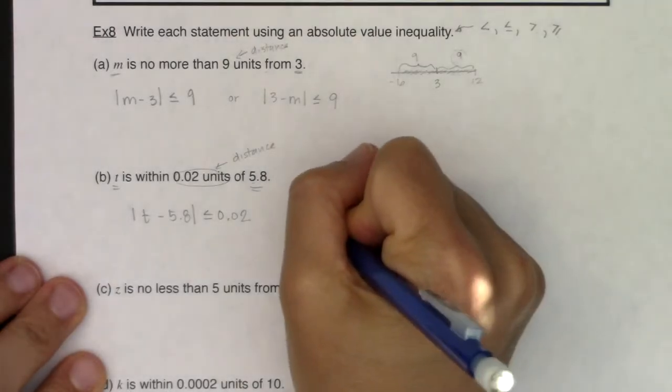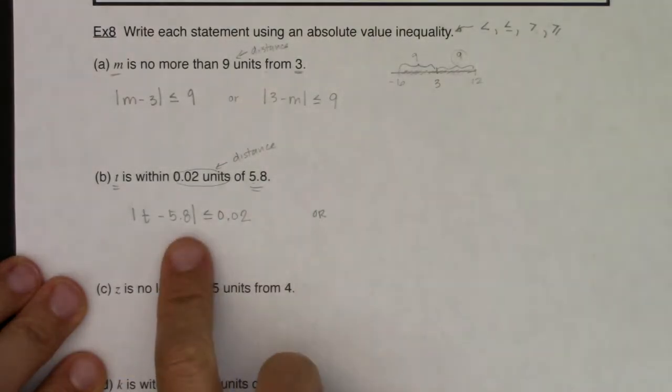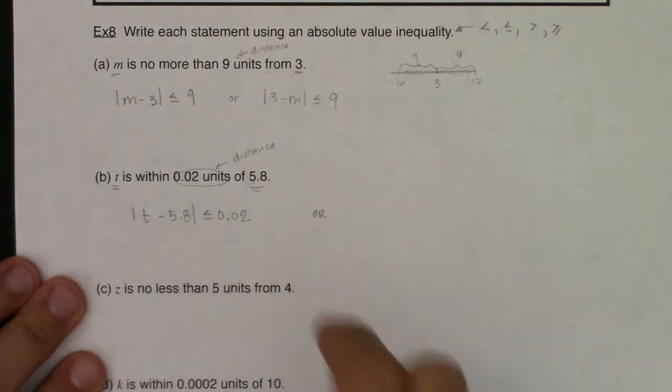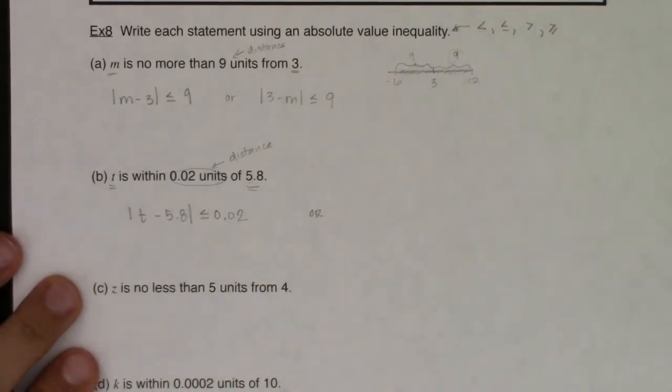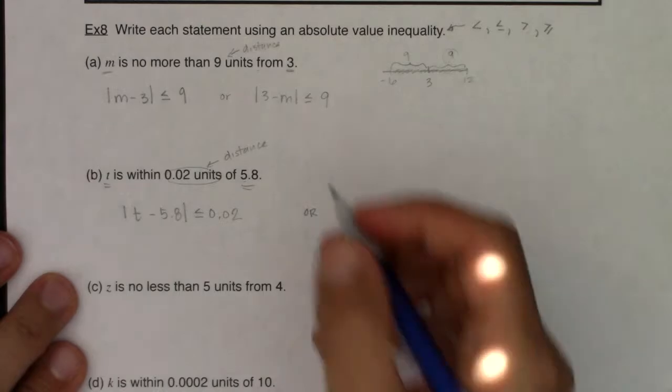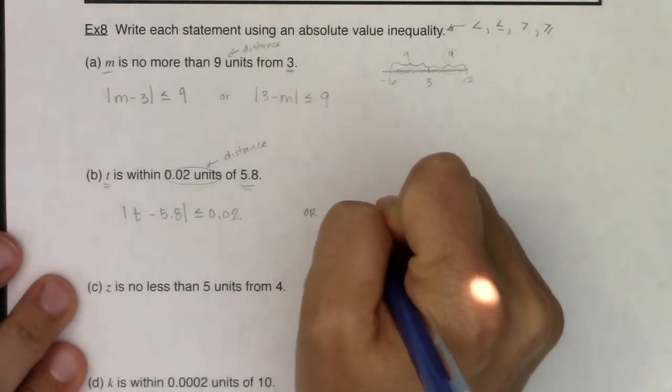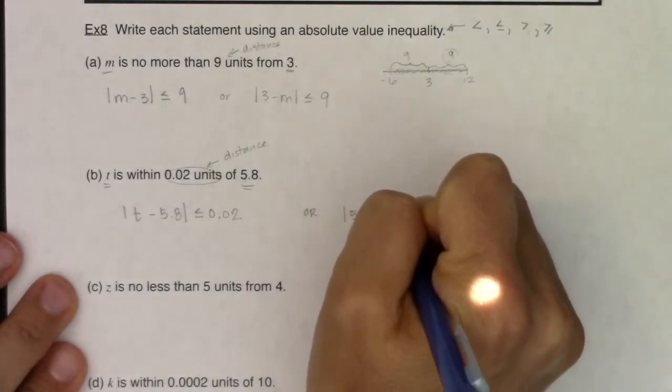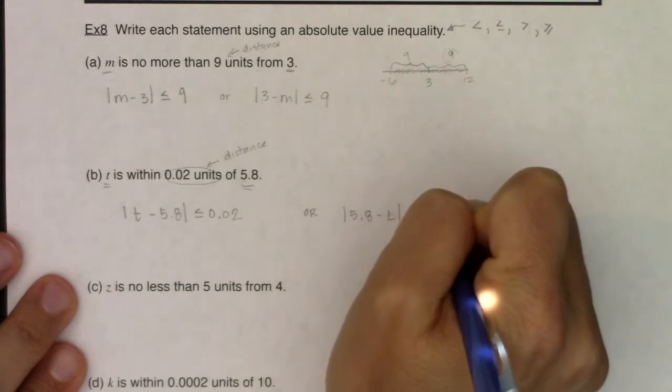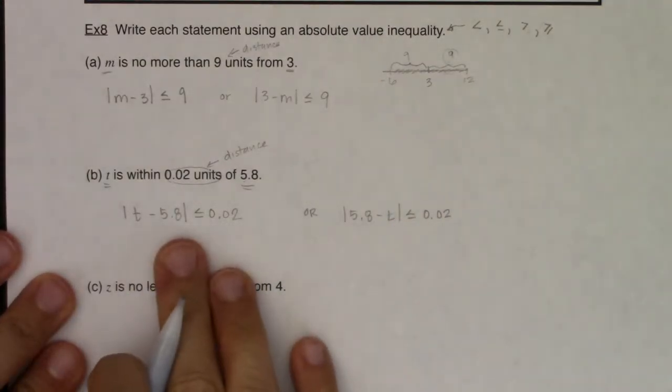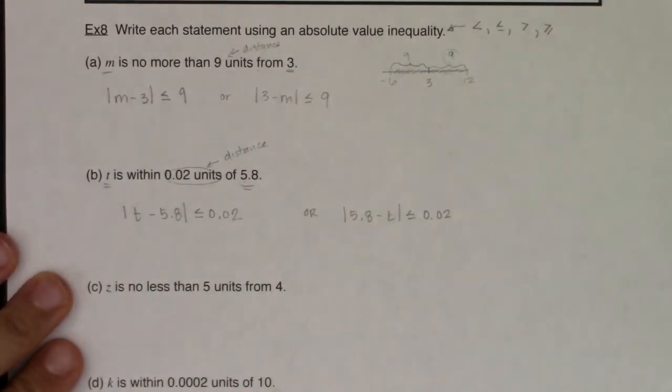Now again, I feel like it's less intuitive or maybe you're like, this wasn't intuitive to begin with. But you could have, if you wanted to, you could have done this the other way. You could have said 5.8 minus t has to be less than or equal to 0.02. I just feel like I'm used to writing them that way.